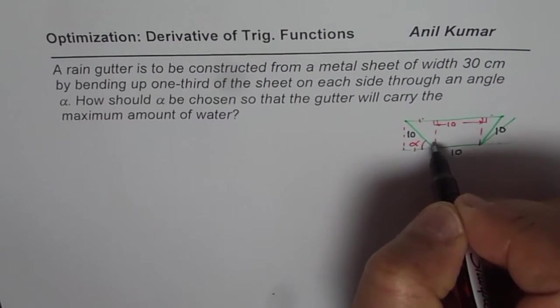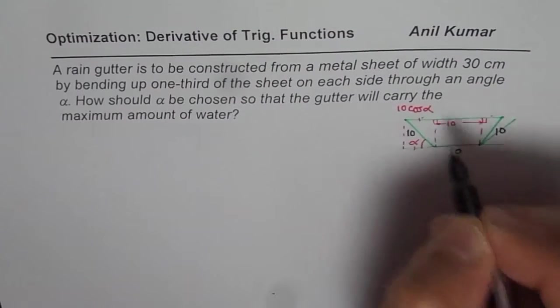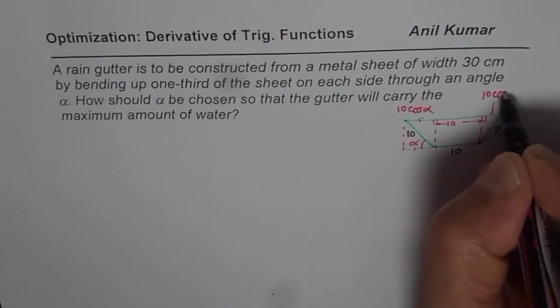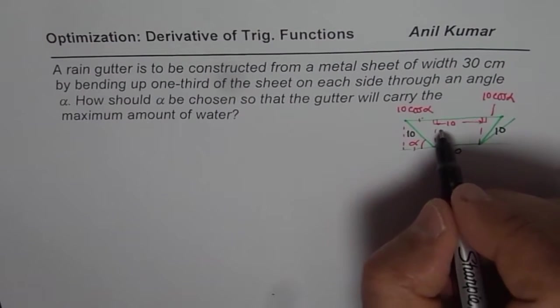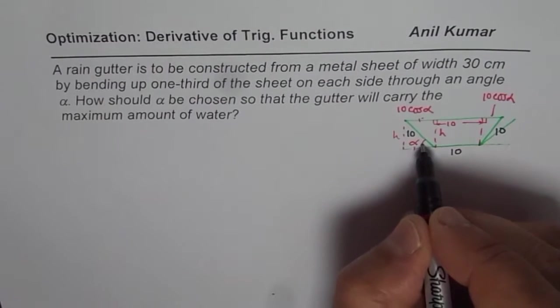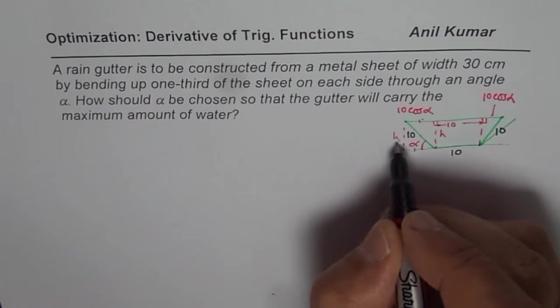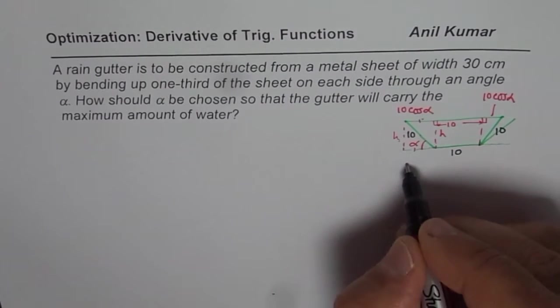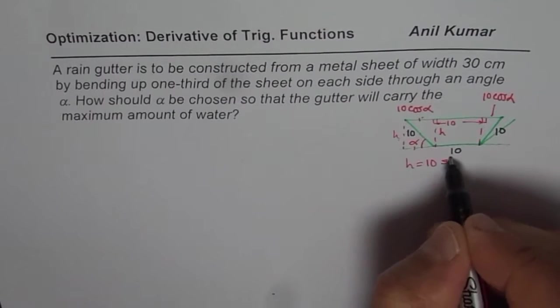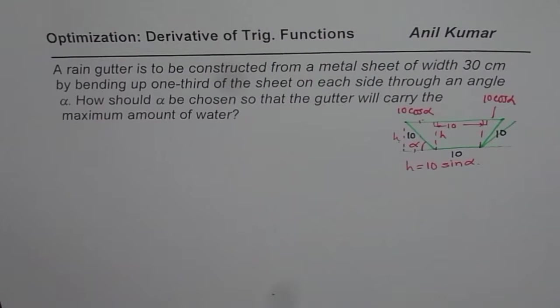When we say it has been formed by bending, that is the area which we need to maximize. The angle which we are considering is the angle with the horizontal. Let this angle be alpha for us. So that is the shape which we also call trapezoid.